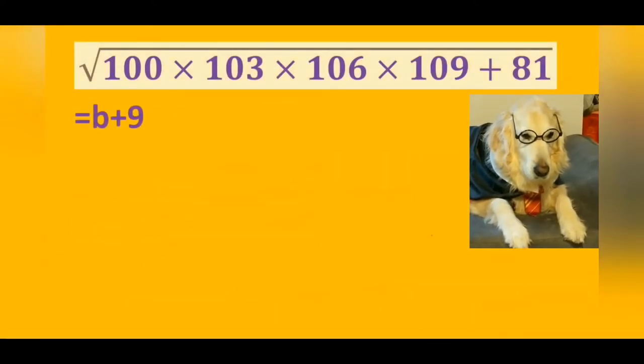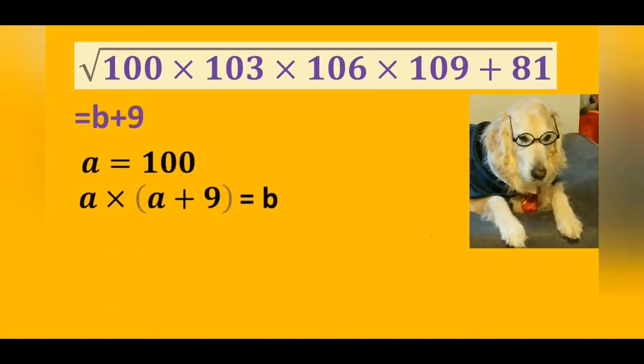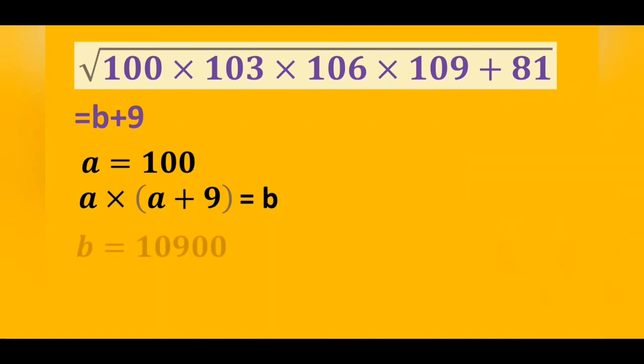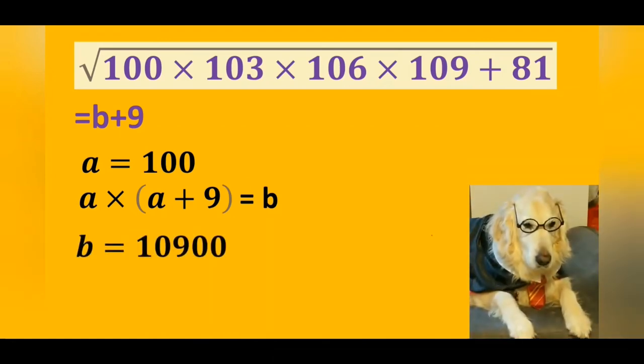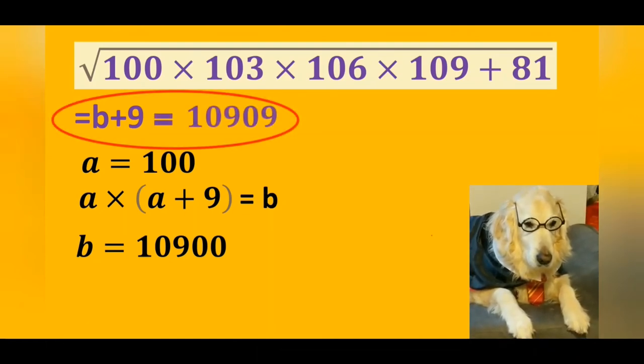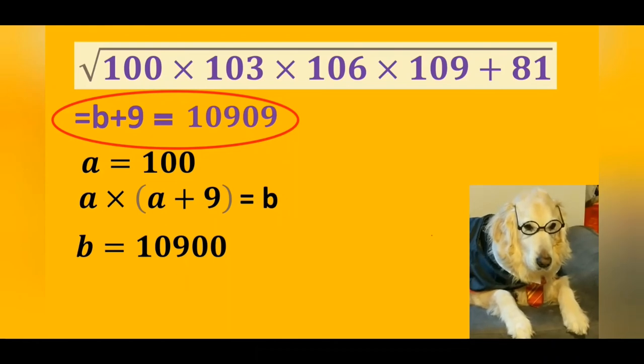That was the initial state of the problem. And now we have its value in variable b. Remember, we first equated the variable a to 100. This was the value of b in terms of a. As a result of the product, we find the value of b as 10900. So the answer is 10909.